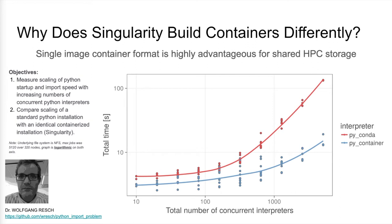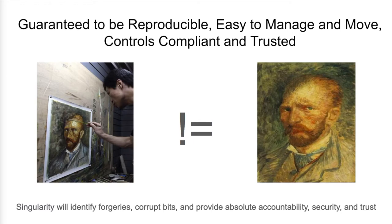Also, this graph is logarithmic if you haven't noticed, so that delta is even bigger than it may seem. Being a single file, SIFs can be managed like any other user-owned data. This means that sharing a container is as easy as changing the POSIX permissions. It also means that you can easily move or share the container using the exact same methods as you already use to manage your existing data. Access controls and compliance apply to your containers as they would to any of your other data.